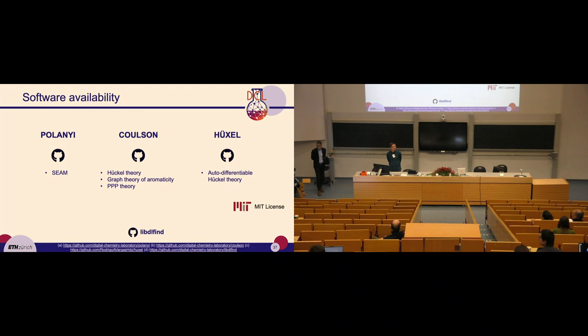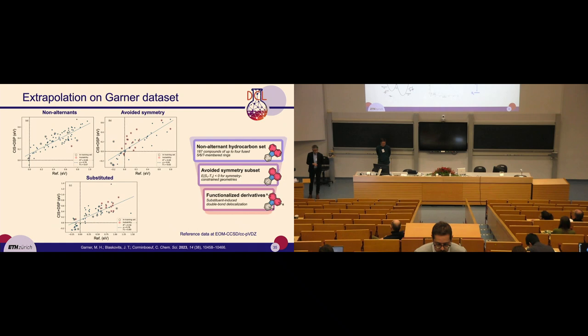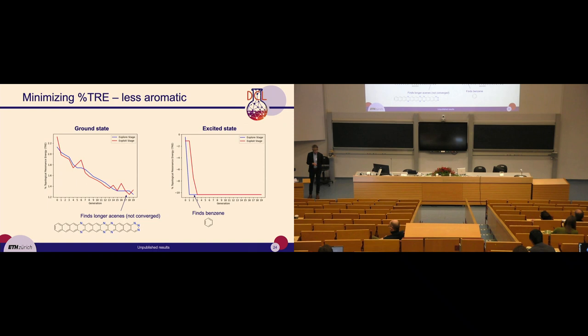Question: You showed a plot about the iterations of generations when finding nice molecules. What is the criteria when you do the different generations — how do you stop and how do you start again? Response: Usually you would start from some representative data set. Because the algorithm doesn't find benzene immediately, benzene is not in the starting generation. You could also vary the starting populations — that could be a hyperparameter of the method.